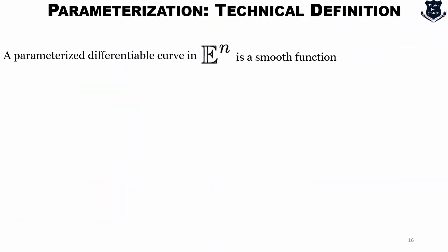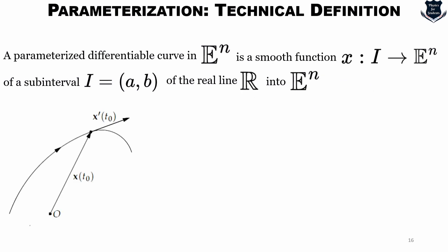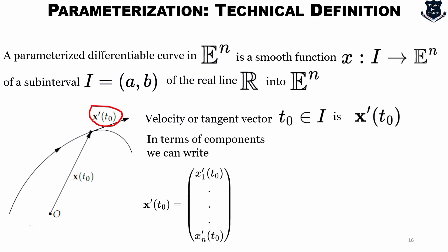Now in general, if you want to define parameterized curve, remember these are differentiable curves. So parameterized differentiable curve in E^n is a smooth function x: I → E^n of a sub-interval I equals (a, b) of the real number line R into E^n, which is the Euclidean space going up to n. Now this is a simple graph and its velocity or tangent vector at t₀, which is a member of I, is a vector x'(t₀), and in terms of the components we can easily write as x'₁(t₀), x'₂(t₀), and it goes up to x'ₙ(t₀).